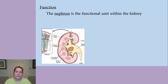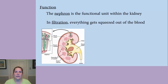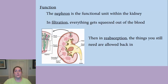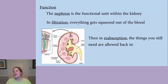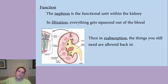There are smaller units within the kidney called nephrons, and the nephron is the functional unit within the kidney. There are two steps to what a nephron does: filtration, where everything gets squeezed out of the blood, and reabsorption, where the things you still need are allowed back in. It's like when you need to clean out your closet — you empty everything out, then decide what you need and only put that back in, and everything else goes to Goodwill or the garbage.